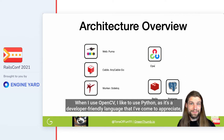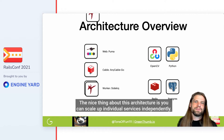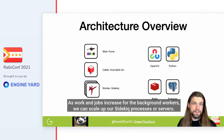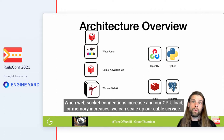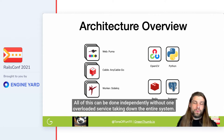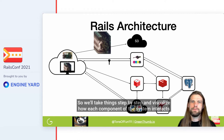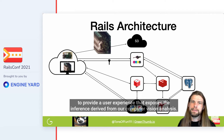When I use OpenCV, I like to use Python — it's a developer-friendly language, very similar to Ruby but with some differences. The nice thing about this architecture is you can scale up individual services independently. As background jobs increase, we can scale up Sidekiq processes. When WebSocket connections increase, we can scale up our cable service. When HTTP requests go up, we can scale up Puma. All of this can be done independently without one overloaded service taking down the entire system. We'll take things step-by-step and visualize how each component interacts to provide a user experience that exposes the inference derived from our computer vision analysis.